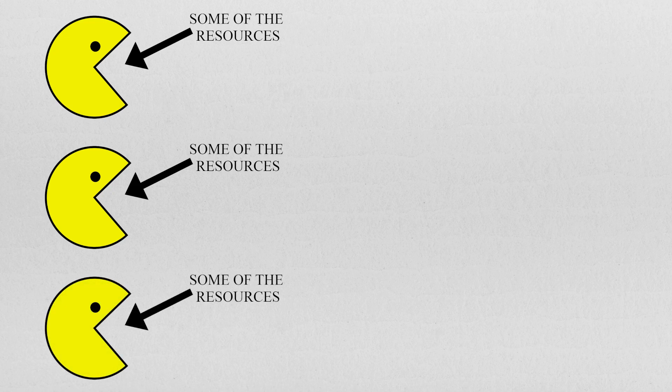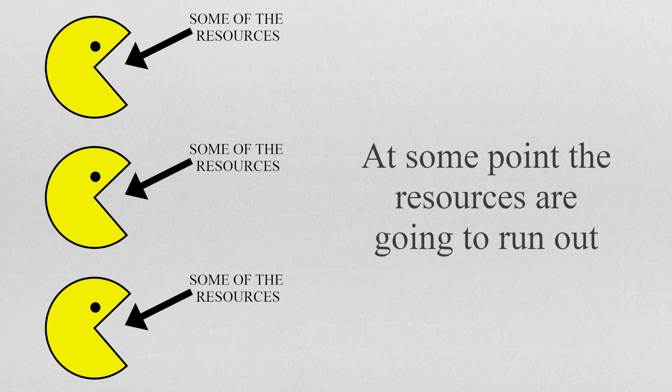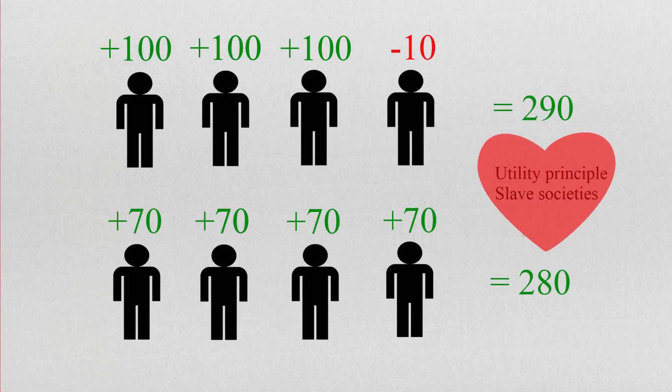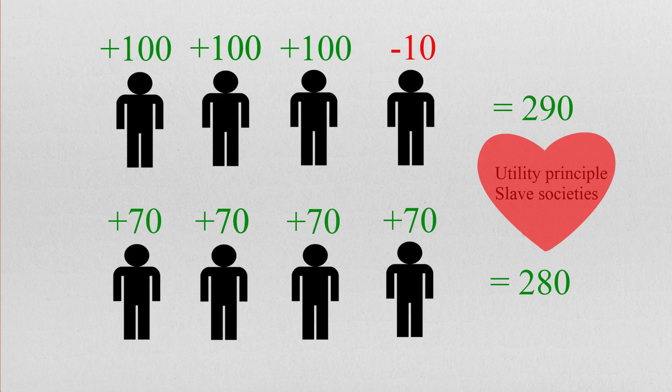since they are the most efficient at quote-unquote converting resources into eudaimonia, at some point the utilitarian calculus would yet again tell us that all the resources should be given to the large number of utility monsters and none to the humans. This gets to the fact that the utilitarian theory may appear to allow extreme disparities in wealth, as already discussed in our video on the slave society counter-example.